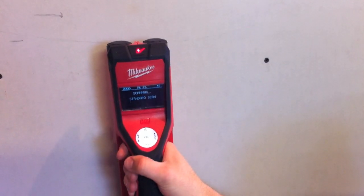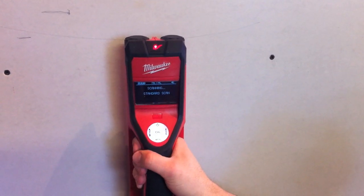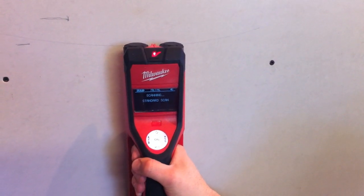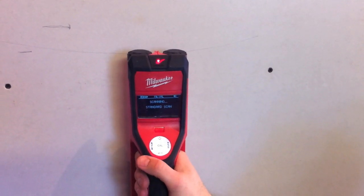If you want to see more about the 2290-20 Milwaukee sub scanner, you can go to milwaukeetools.com or go to toolsinaction.com.